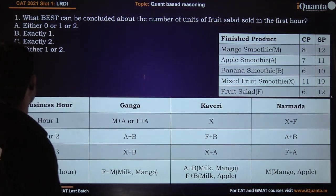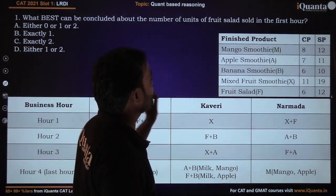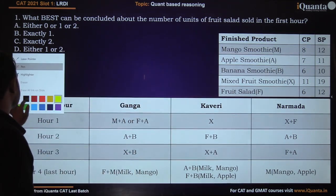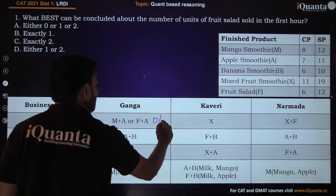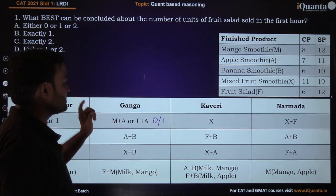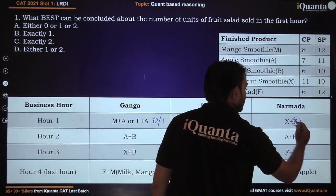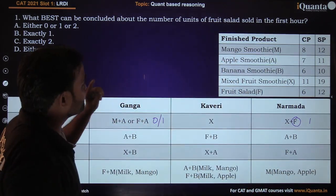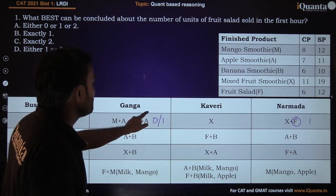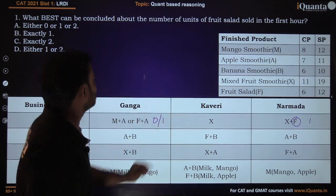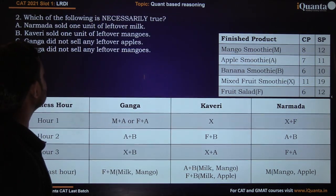Question one: What is the best conclusion about the number of units of fruit salad sold in the first hour? From the table, Ganga sold either mango smoothie or fruit salad in hour one. Narmada certainly sold one fruit salad. So the total is either zero plus one equals one, or one plus one equals two — meaning the answer is either one or two.